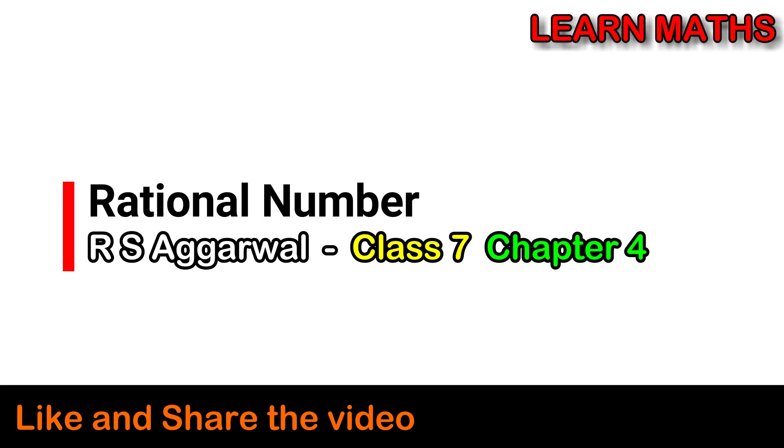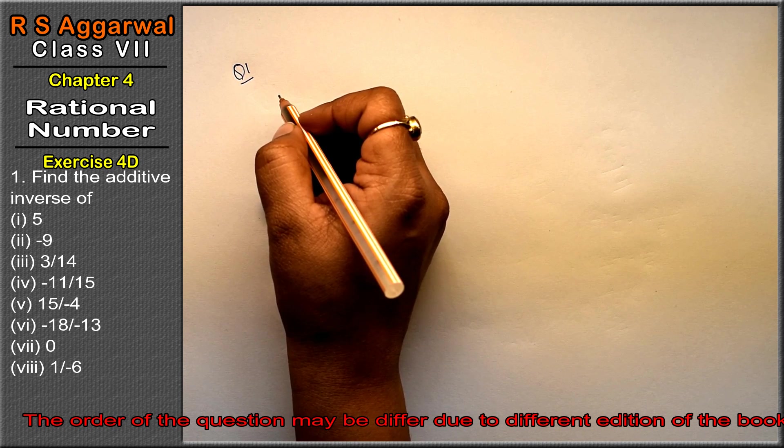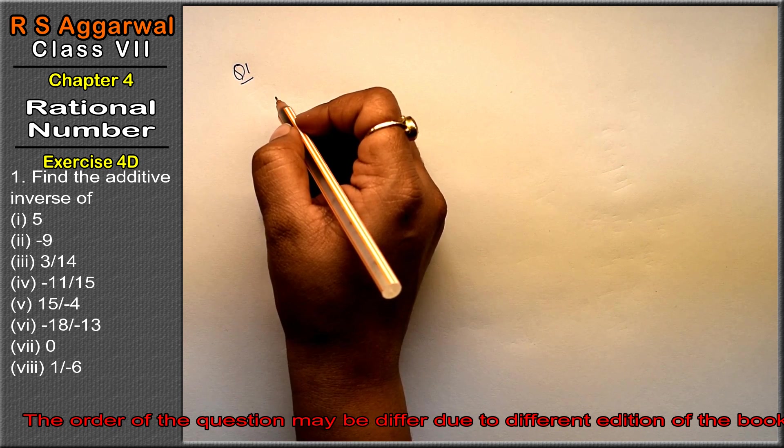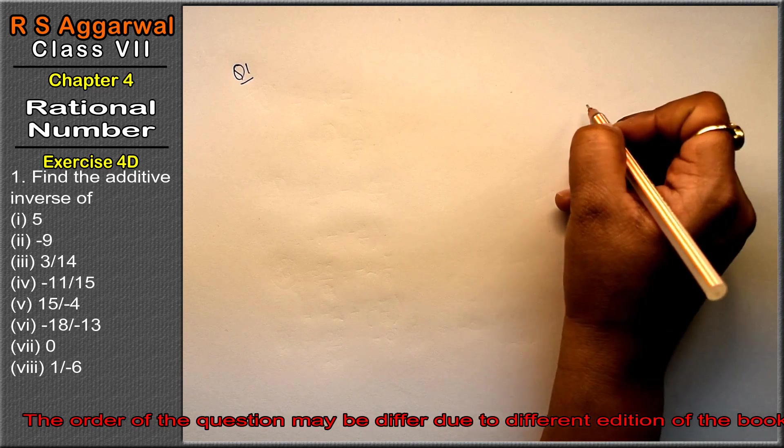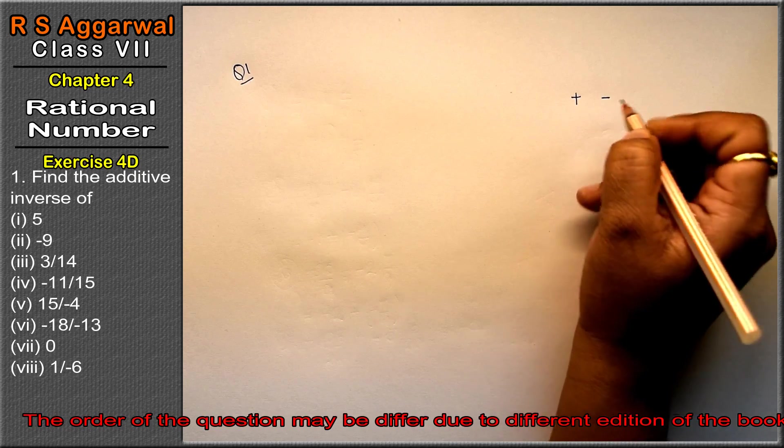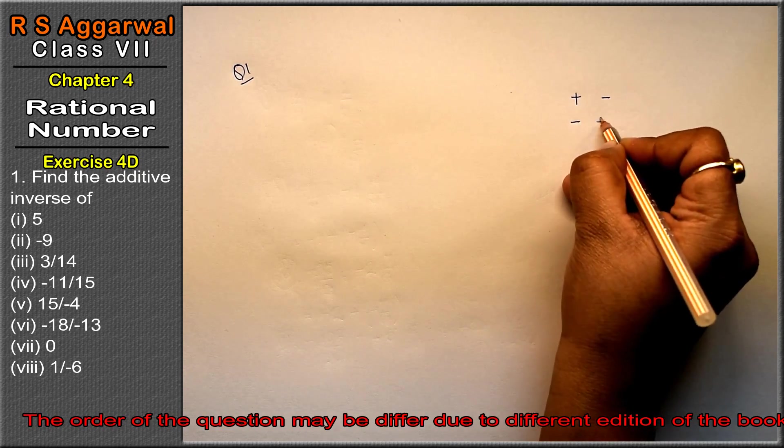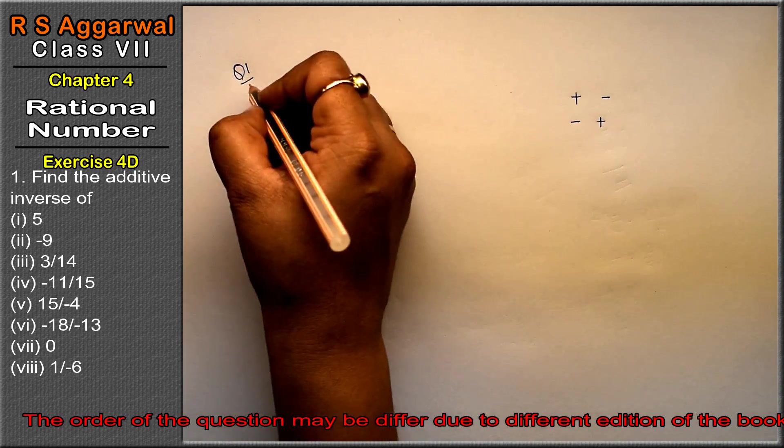Let's do question number 1 of Exercise 4D. The question is: find the additive inverse. Friends, additive inverse means the opposite. If there's a plus sign, it becomes minus. If there's a minus sign, it becomes plus. These are called additive inverses.